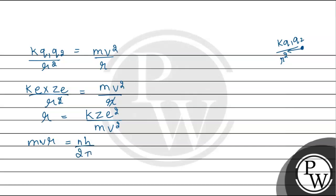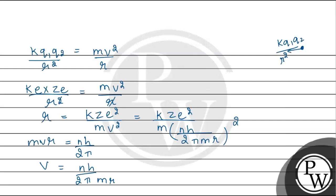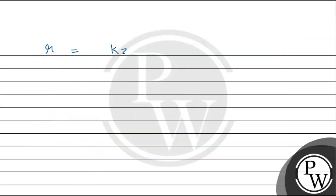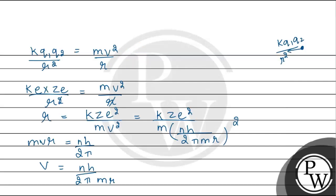We also know from Bohr's second postulate that mvr = nh / 2π. From this, the velocity formula is: v = nh / (2π·m·r). We substitute this velocity formula into the equation above, so it becomes: r = k·Z·e² / [m · (nh / 2π·m·r)²].